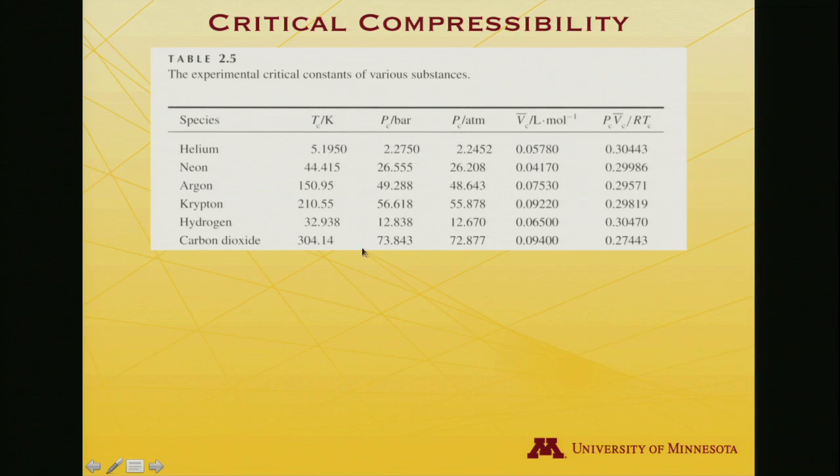Now we're in the specific instance where critical pressure, critical molar volume, and critical temperature are the relevant variables. Notice something interesting: although there's enormous variation in these numbers, the compressibility spans a fairly small range. The smallest is about 0.274, the largest is 0.304—only about a 10% range in compressibility. Why might that be?